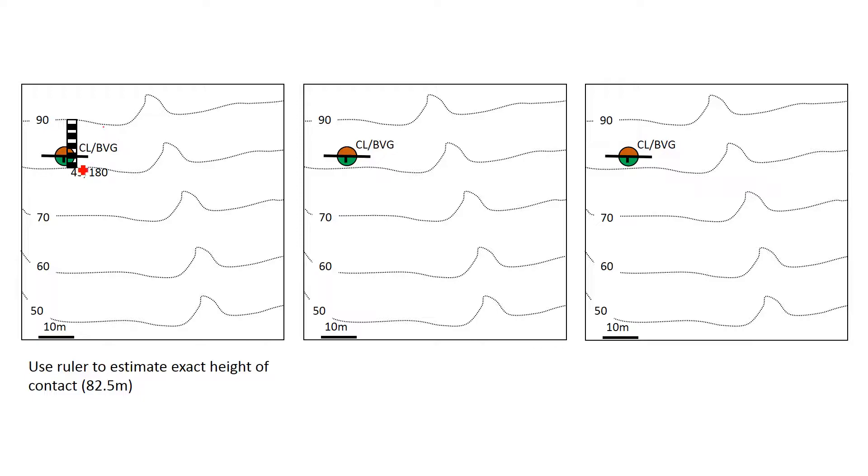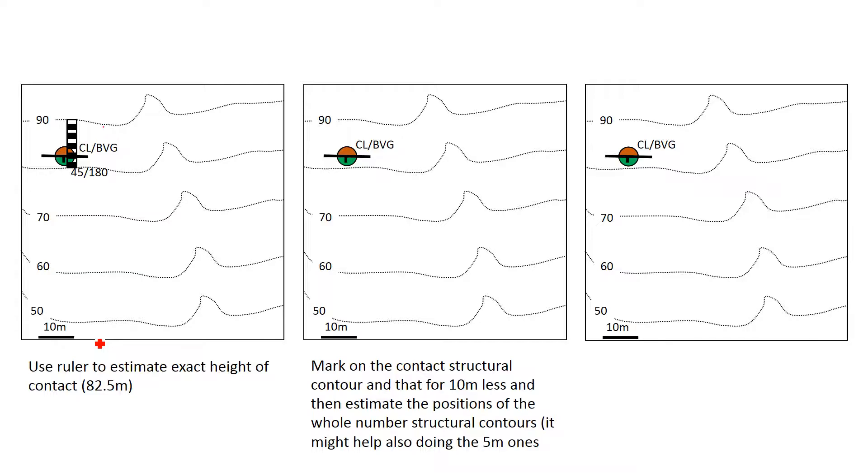So you can see here that I've just put on a ruler here. There are 10 divisions on this kind of PowerPoint ruler and you can see that it's roughly two and a half kind of up, so we can say that the contact is actually 82 and a half meters.